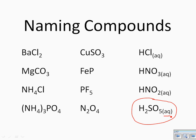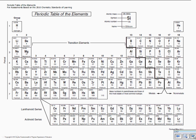Notice the aqueous — we know it's in solution. And it starts with, like all the other videos, we look at that first element: it is hydrogen. You should know that hydrogen will tell us it's an acid, but let's take a look at where it is on the periodic table.